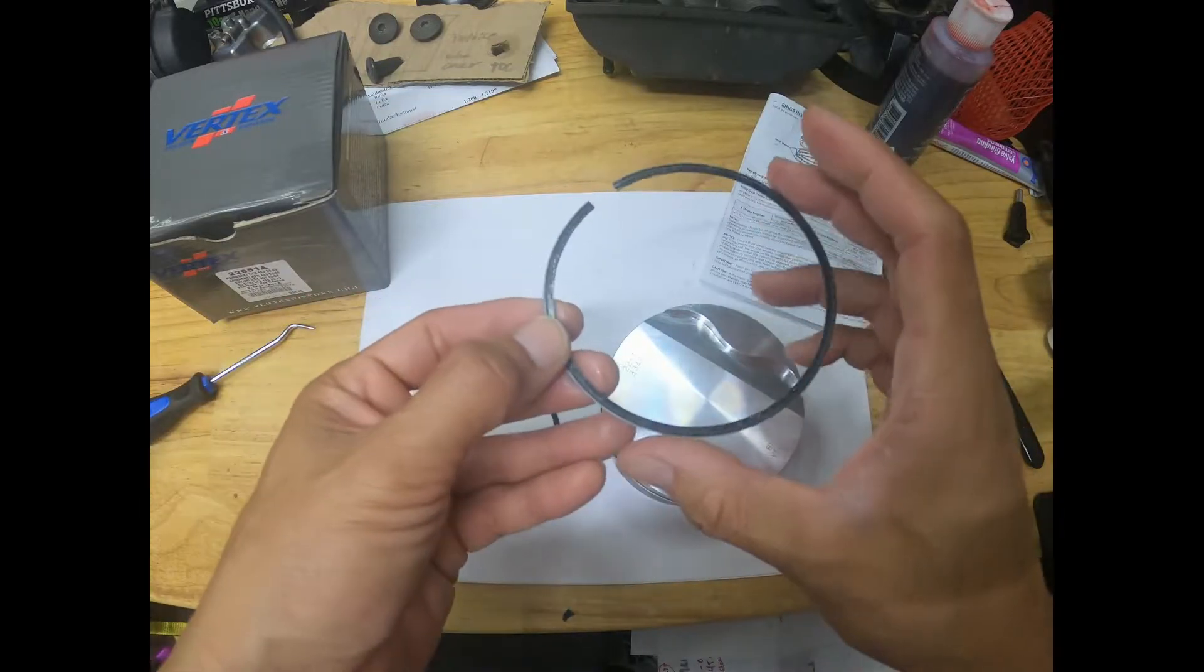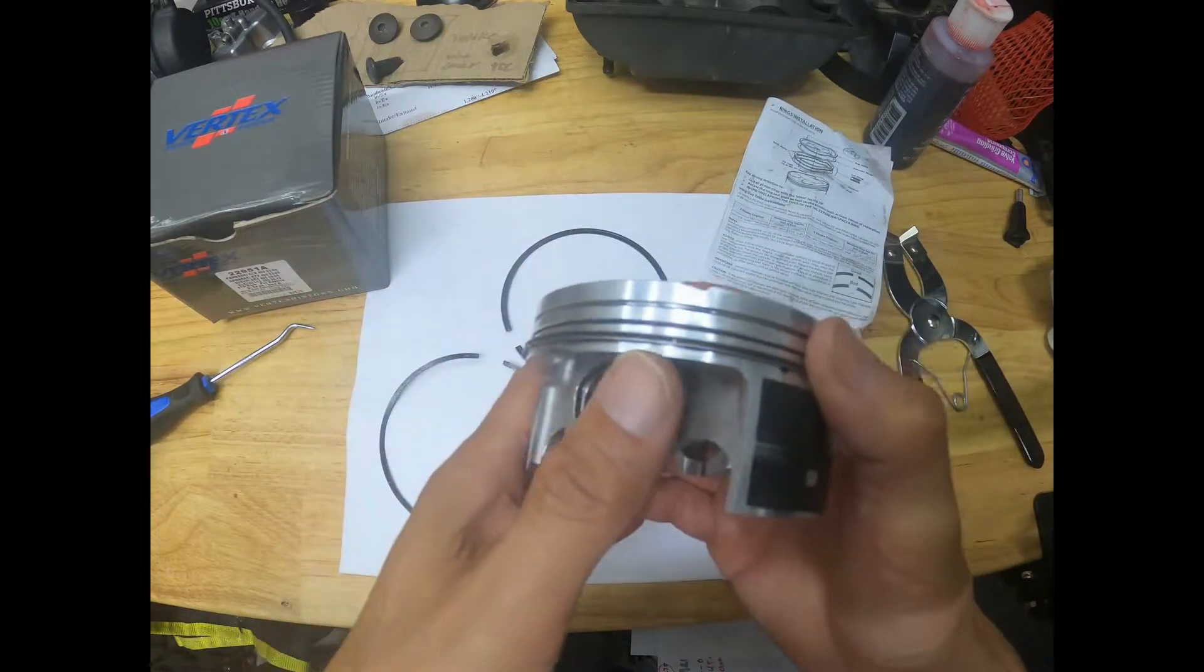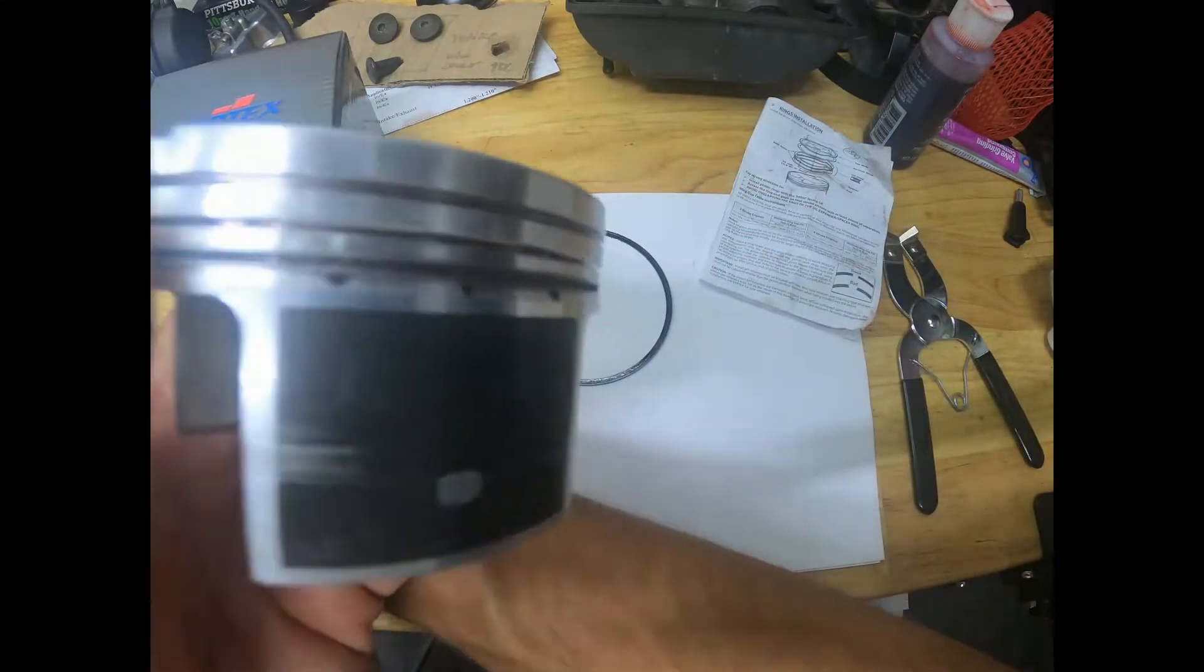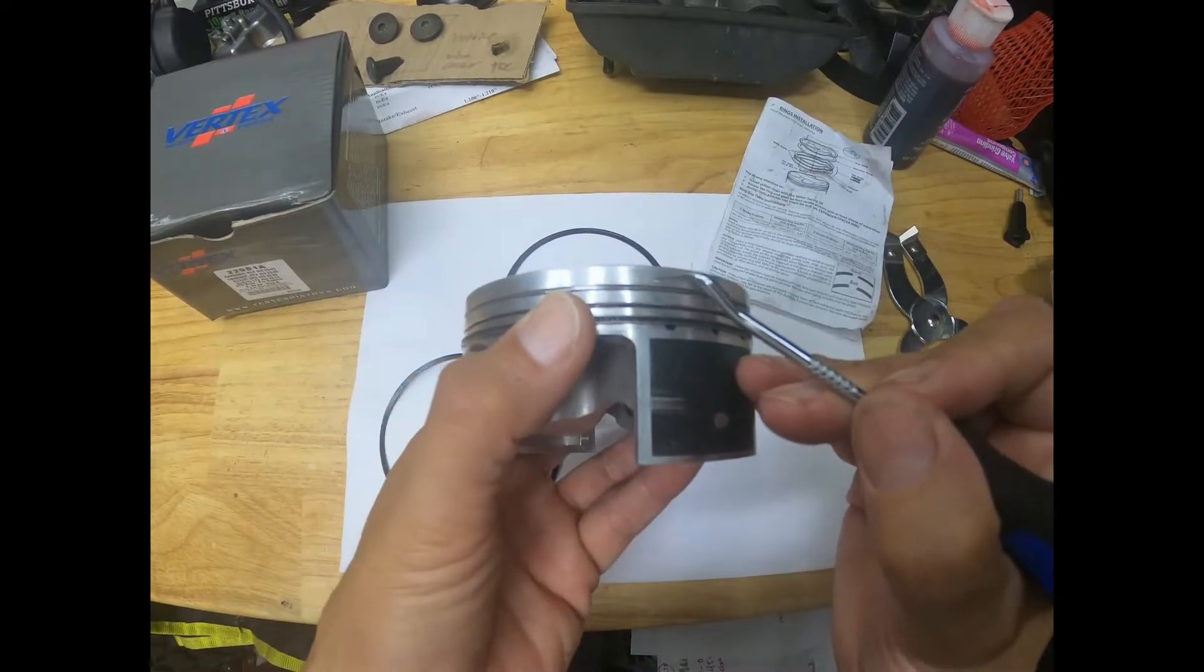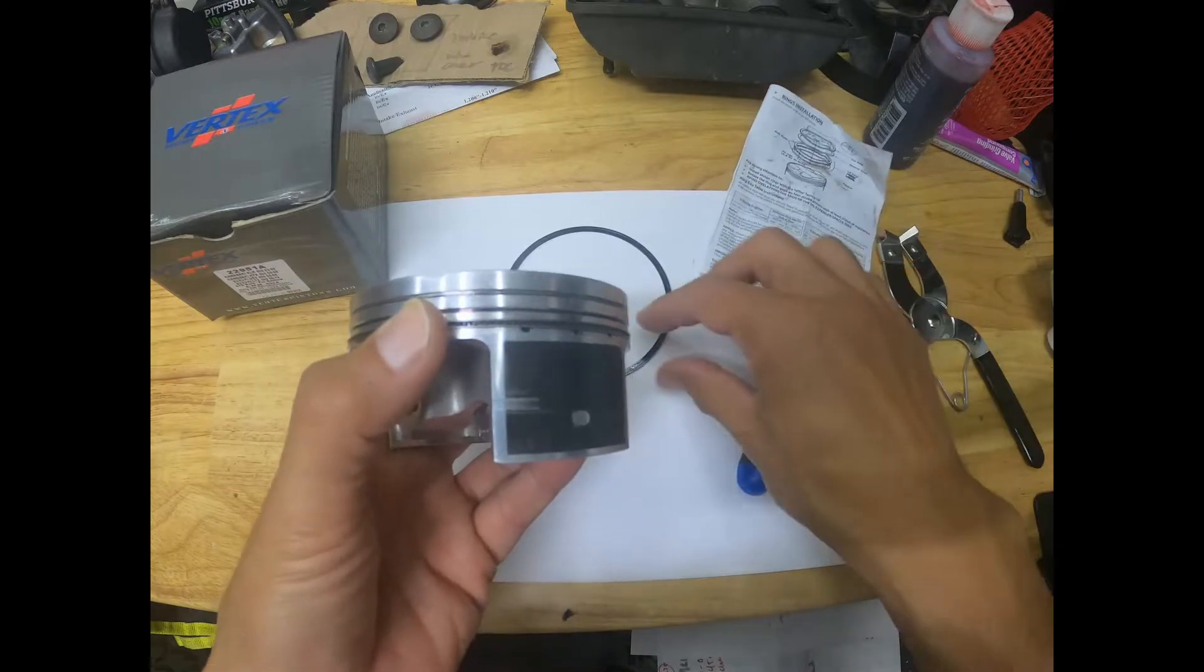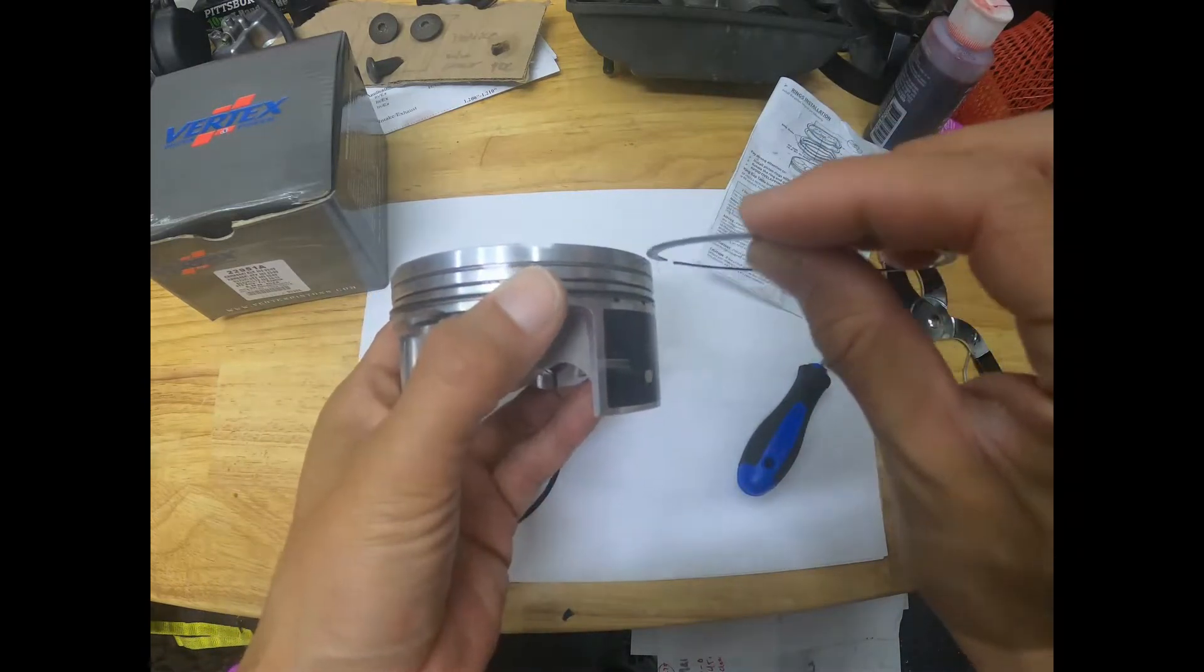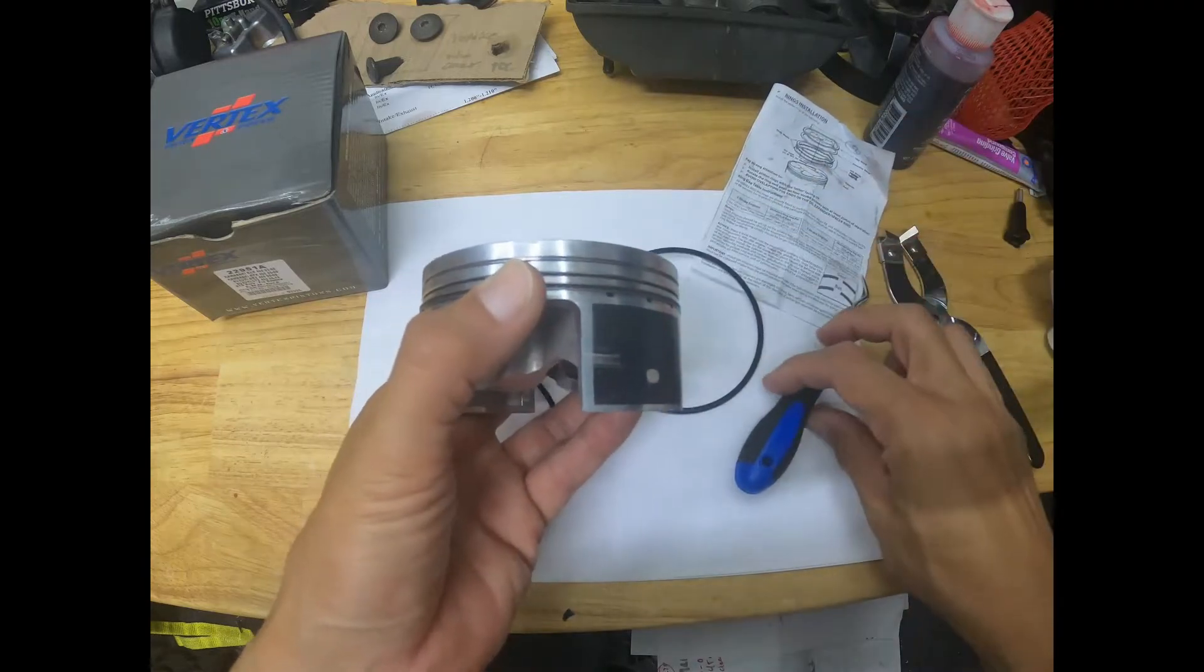The bevel should go in the upward position because if you look at the piston itself you'll see that there's an actual lip inside right here. So that ring should go bevel up and it'll fit right in this lip.